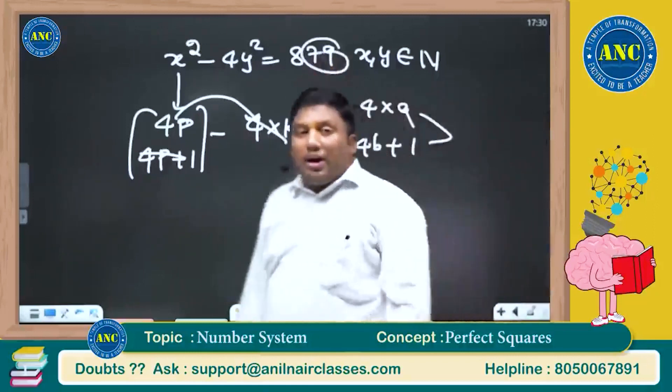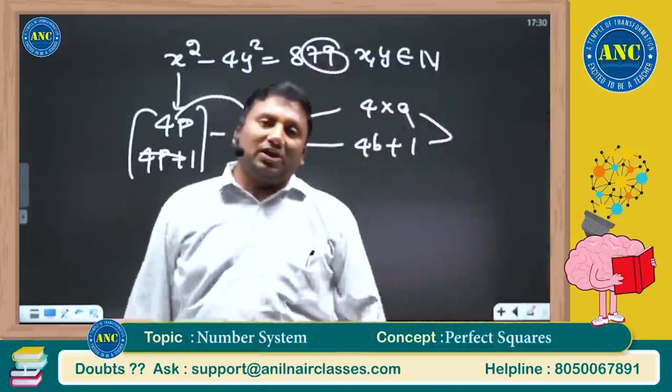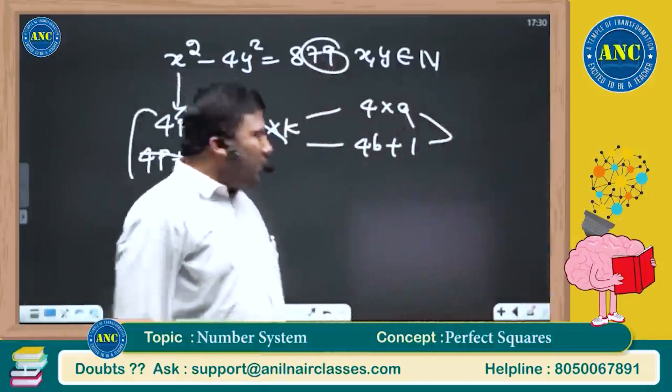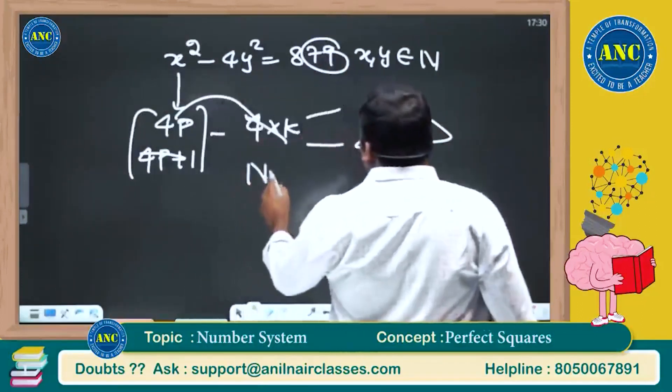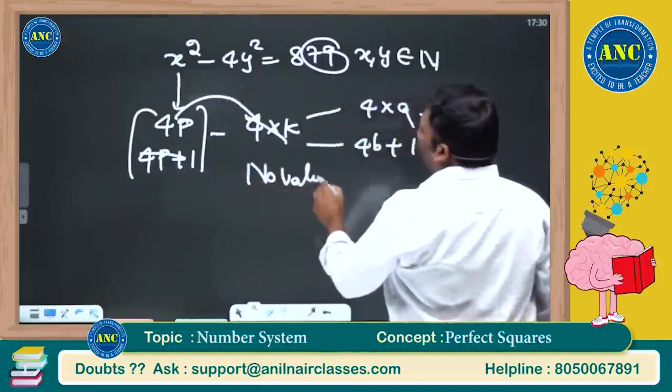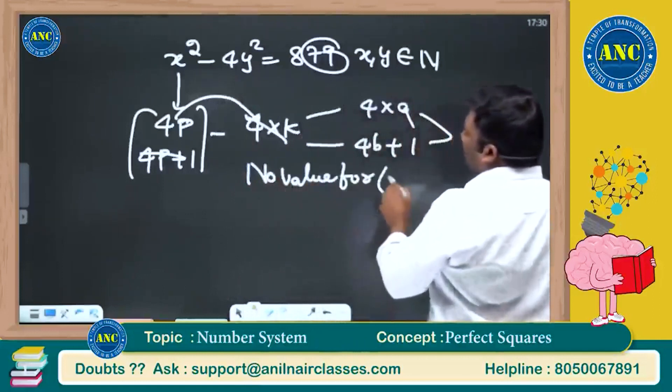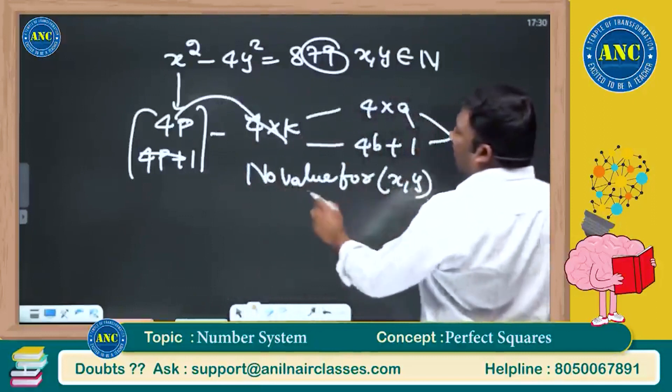879: 4 into 1976 plus 3. 4k plus 3 form does not arise. What is the answer for this question? No value for x comma y exists. This is how the questions are prepared.